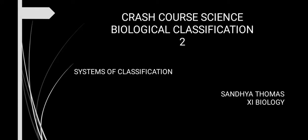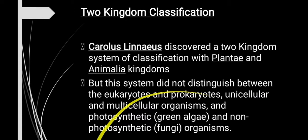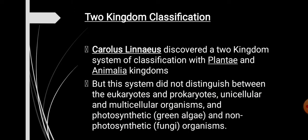Welcome to biological classification, session 2. In this module we are going to learn about the different systems of classification. First, let us learn about the two-kingdom classification, which was proposed by Carlos Linnaeus. He placed all organisms into two kingdoms: Kingdom Plantae and Kingdom Animalia. This system was reasonable for that time because it was easy to distinguish between the immobile plants and the mobile animals.